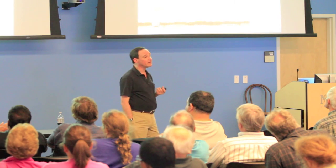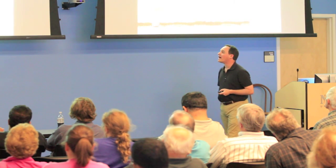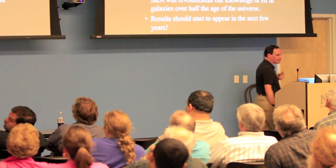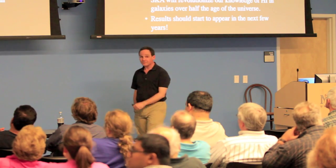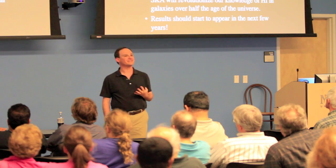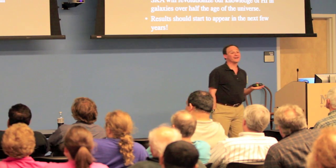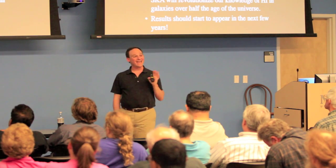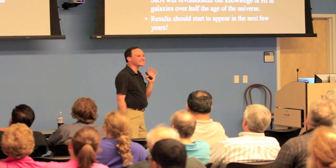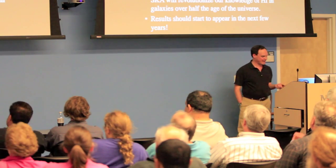The Square Kilometer Array — the SKA — which gets built in the 2020s, will completely revolutionize the field, with a square kilometer of collecting area — 10 times bigger than Arecibo — and should detect millions of galaxies at these distances. While we have a general idea of how neutral hydrogen is evolving over cosmic time, we really lack detailed knowledge. But with refurbished telescopes, existing telescopes, and brand new ones, this field is about to be transformed. Over the next five years or so, you're going to start hearing a lot about distant hydrogen detections. Thank you very much.